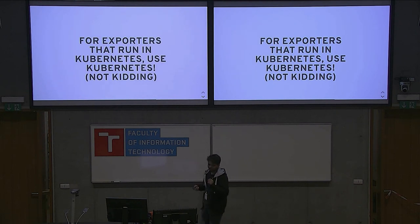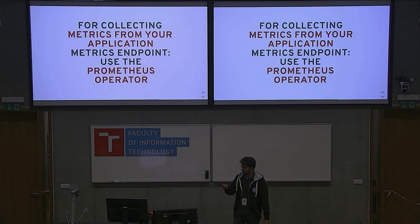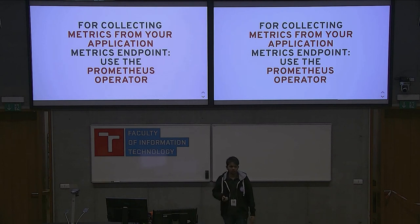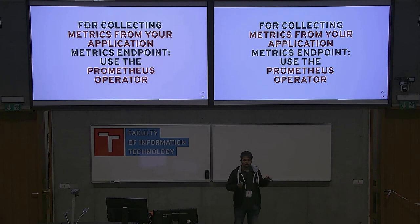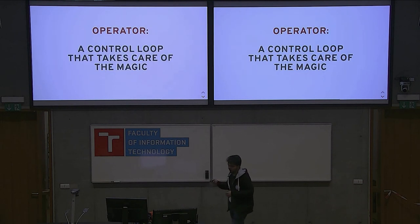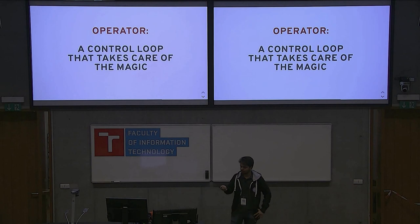For exporters that run on Kubernetes, use Kubernetes — they are so lightweight you can just run them in a pod. And if you are trying to collect application metrics, use the Prometheus operator. If you are using Prometheus and you are not using the Prometheus operator, you are missing out on a lot of fun. The operator is a control loop that takes care of all the magic — creating the Prometheus instance and managing configuration.